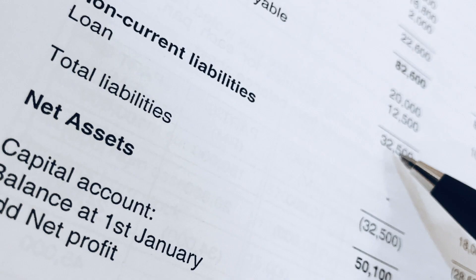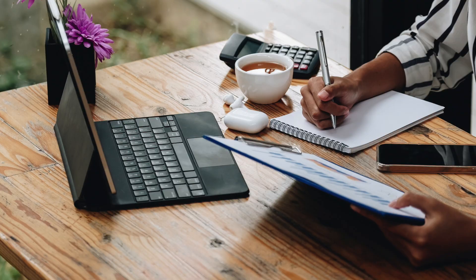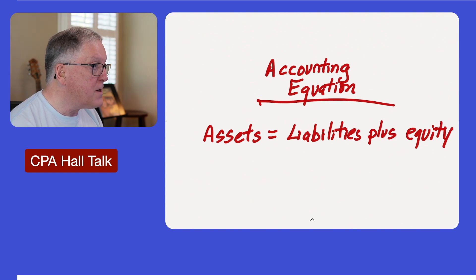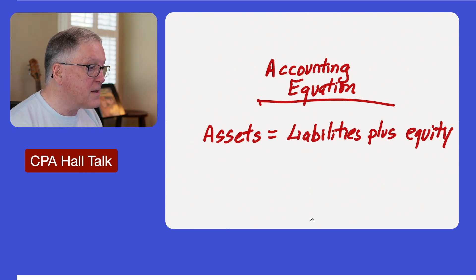For a business, it might own a building, vehicles, investments, and receivables. If you take those assets and subtract a loan owed to a bank or invoices owed to vendors — assets minus liabilities equals equity. So here's the accounting equation: assets equals liabilities plus equity. If we wanted to compute equity, we could take assets minus liabilities. That's the basic accounting equation, and it's always true — it never changes.